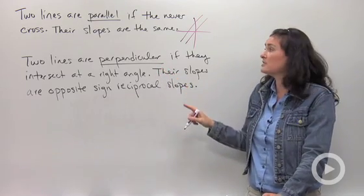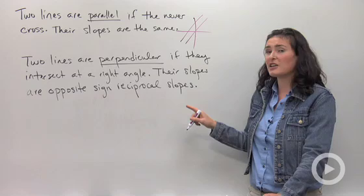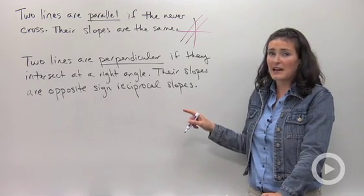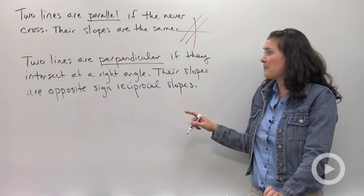This is a different concept. Two lines are called perpendicular if they intersect at a right angle. Their slopes are opposite sign reciprocals.